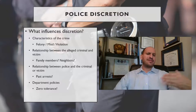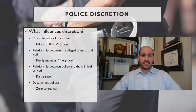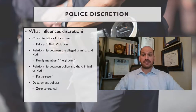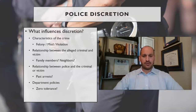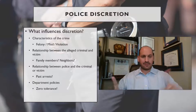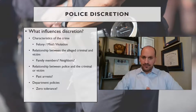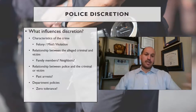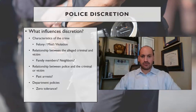What influences discretion? The offense: typically, if it's a felony, police have no choice. For misdemeanors, they typically have some discretion. For violations, officers usually have a lot of discretion. The relationship between the victim and the criminal matters — are they family, friends, neighbors? If two strangers argue, police can send them separate ways. But if they know each other, there's a likelihood of future violence. Prior criminal history also factors in. And police department requirements matter: if the department says zero tolerance, officers must carry that out.